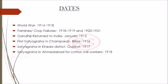Then in 1919 came the Rowlatt Act, according to which anyone can be put in prison for 2 years without a trial in the court. After this came the Jallianwala Bagh massacre on 13th April 1919, on the day of Baisakhi, in which hundreds and hundreds of people died in our country.